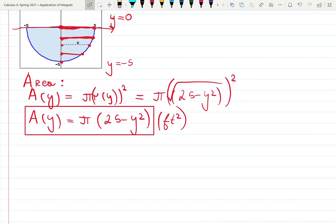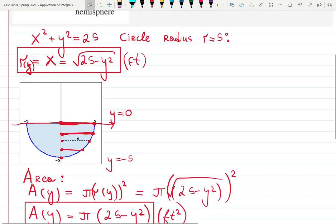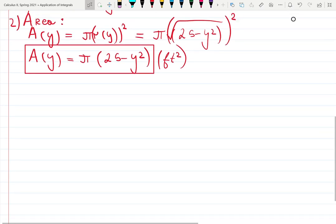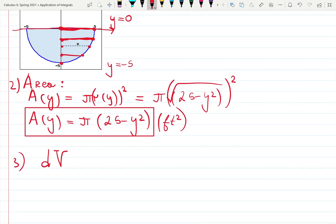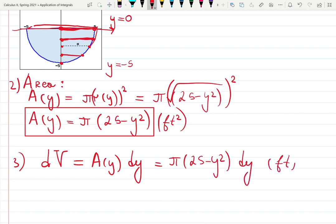Now, the volume. Each slice has a volume which we're going to call dV. It's not just a circle. Each slice has a thickness. So the volume will be the area we just found times the thickness, which is the same for all the slices, dy. So that is pi times 25 minus y squared dy. The volume now is in cubic feet.